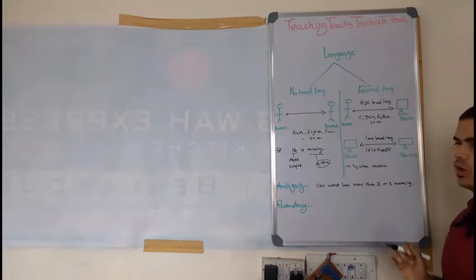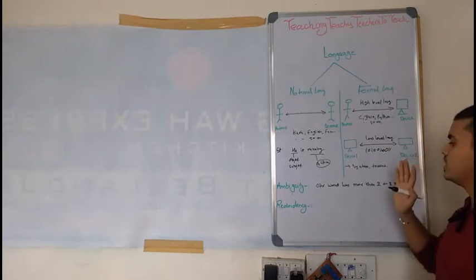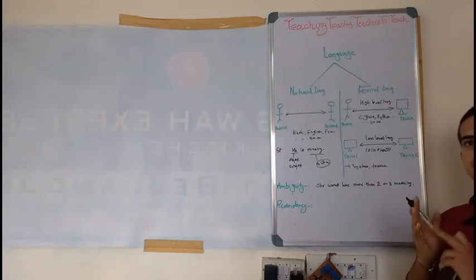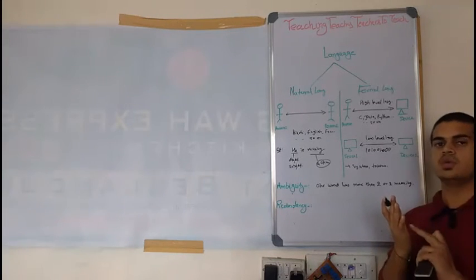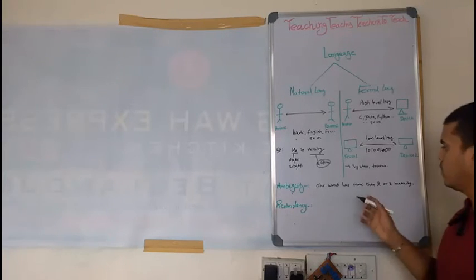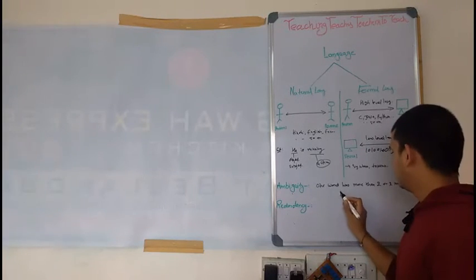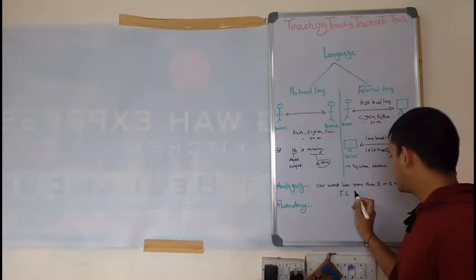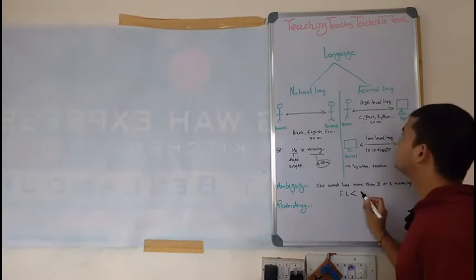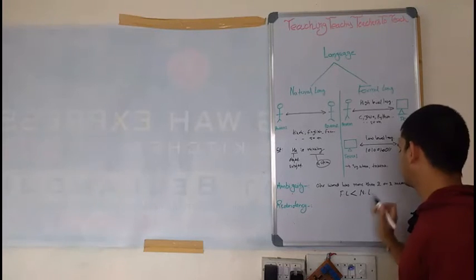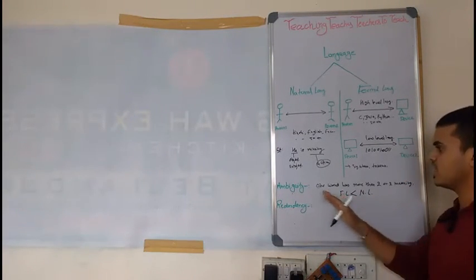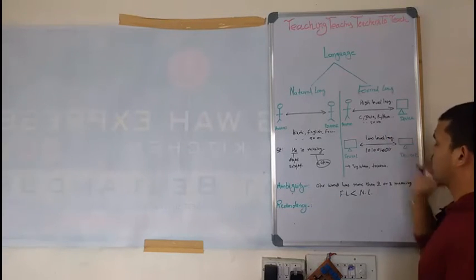If I am talking about formal language, in formal language less ambiguity should be there. Means if you have a word, it should have only one meaning, not more than two. So we can relate like that: formal language is less ambiguous with natural language. So ambiguity is less in formal language.